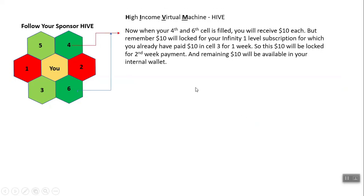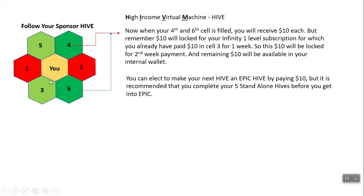When the fourth and sixth cells are filled, you will be getting $10 each — that's $20 in total. But remember, $10 will be locked for your Infinity 1 level subscription, for which you already paid $10 when you filled the third cell of your hive. That $10 was used for one week, and one of these $10 will be blocked for your second week. The remaining $10 will be available in your internal wallet. You can elect your next hive to be an Epic Hive by paying an additional $10, but it is not recommended. We recommend that you complete your five standalone hives before you get into Epic.